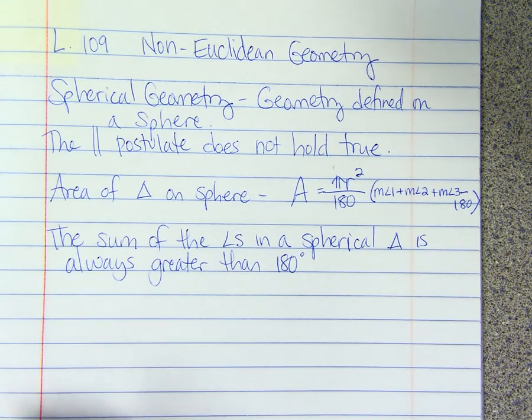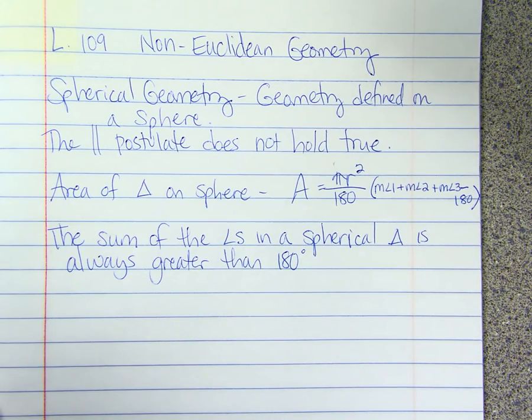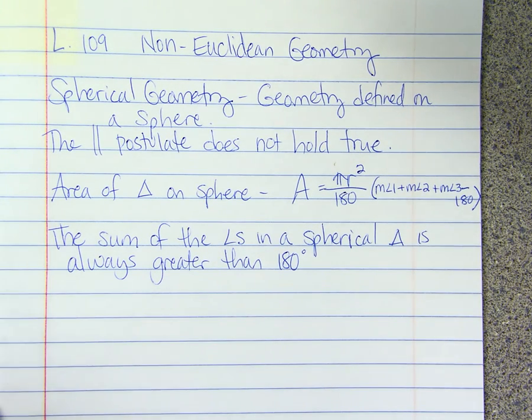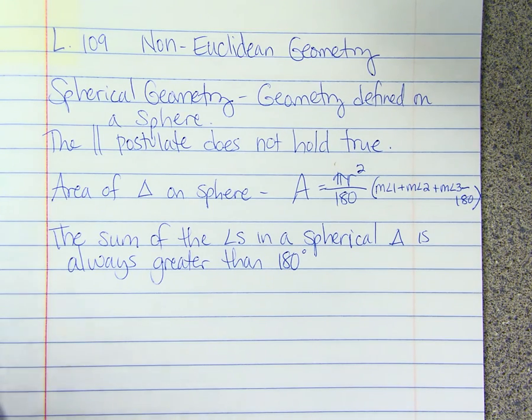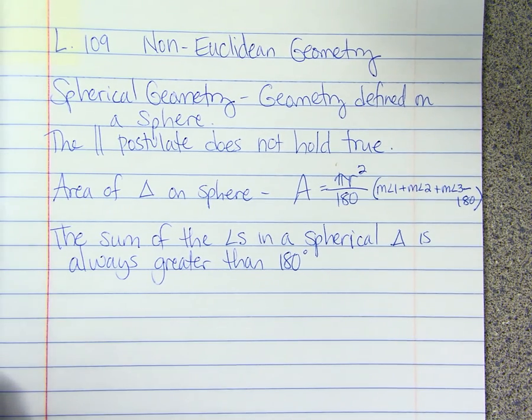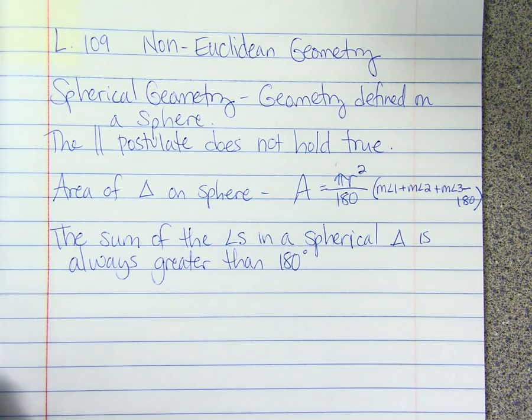We can classify triangles on a sphere. A right triangle would have all right angles. Equilateral would still mean all the sides are congruent.